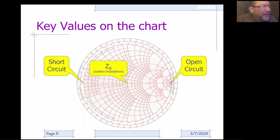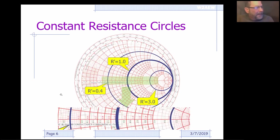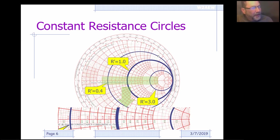On the chart you have circles that are all tangent to the open end — these are called constant resistance circles. So anywhere on these red lines, which are represented on all Smith charts, your resistance stays constant. No matter if you're up in the inductive zone, if you follow that curve, your resistance is not going to change.